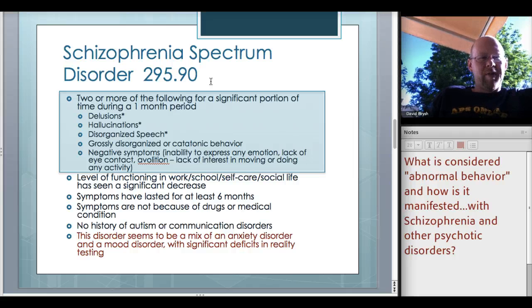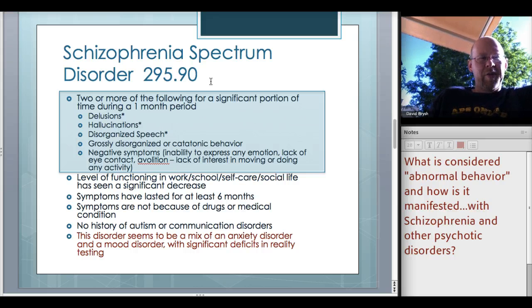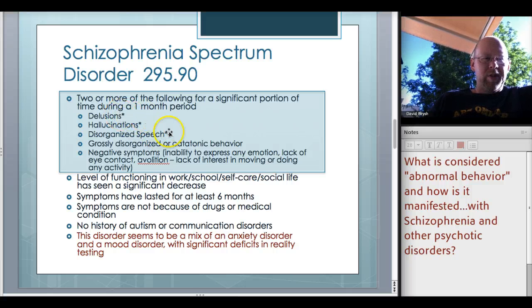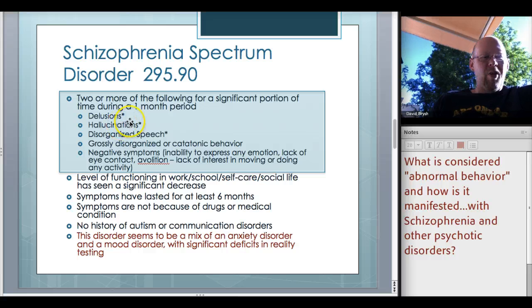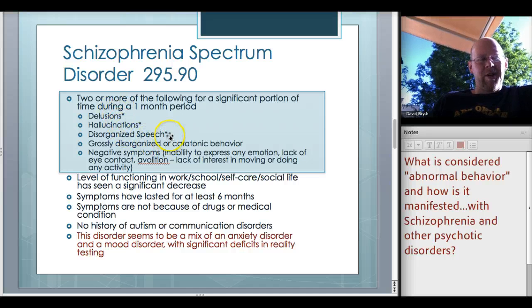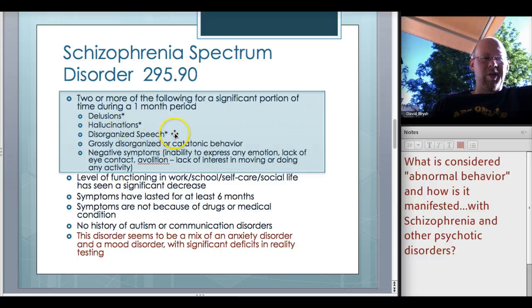For a diagnosis of schizophrenia, you need two or more of the following for a significant portion of time during a one-month period: delusions, hallucinations, disorganized speech, grossly disorganized or catatonic behavior, and negative symptoms. One of the asterisked symptoms — delusions, hallucinations, or disorganized speech — has to be present. So you have to have, for example, delusions and grossly disorganized or catatonic behavior, or hallucinations and negative symptoms, or disorganized speech and negative symptoms, and so on.